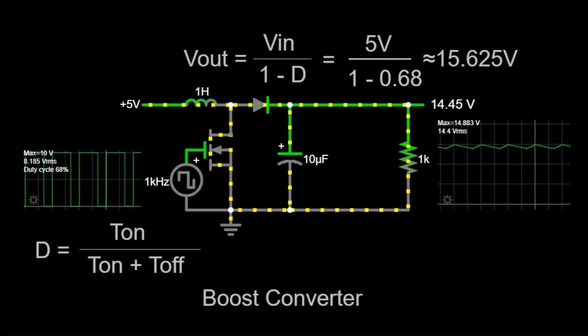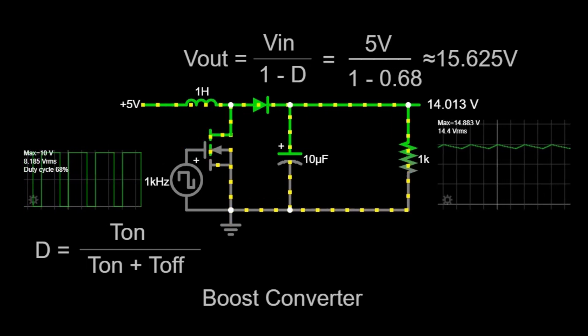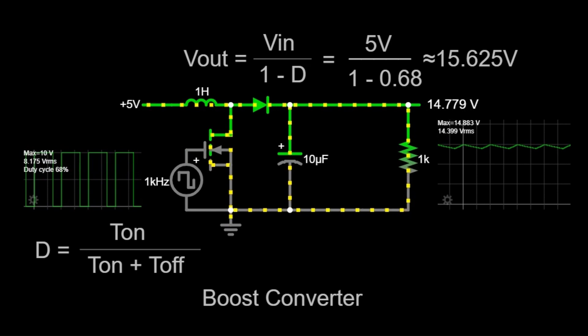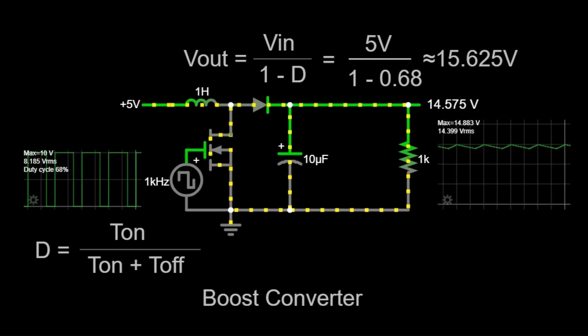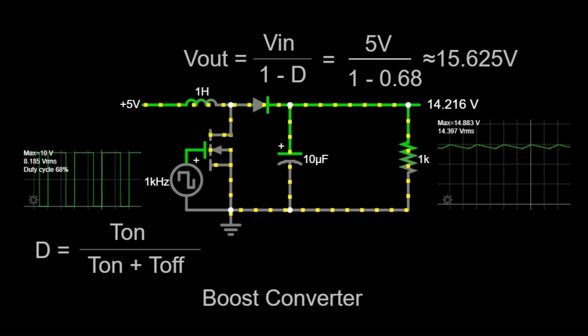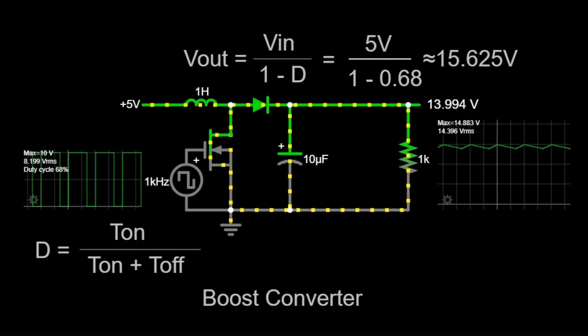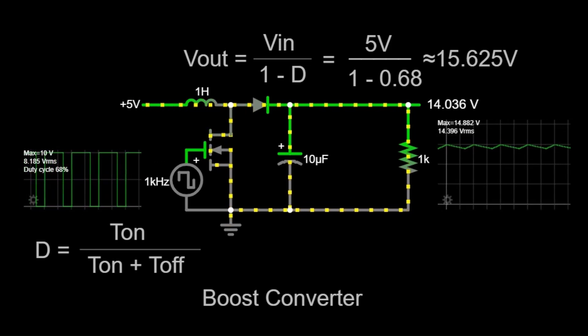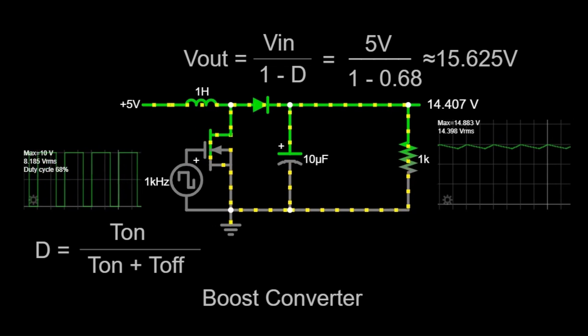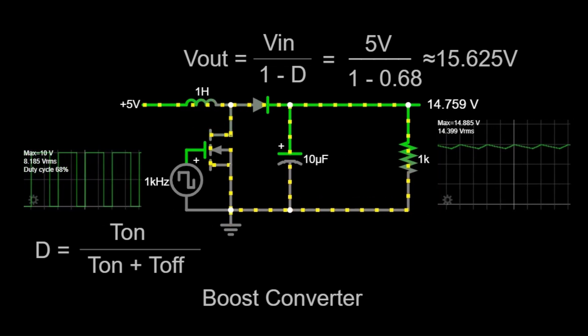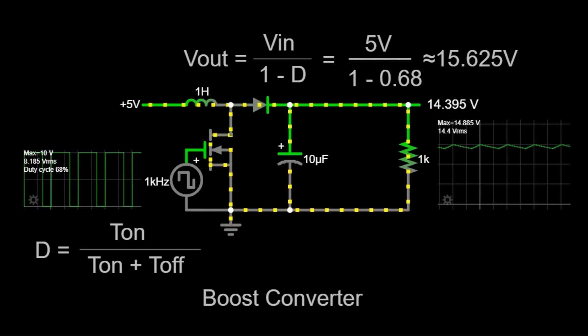First, we have the inductor. The inductor is a passive electronic component that stores energy in the form of a magnetic field when current flows through it. In our circuit, the inductor is labeled as 1 Henry, which is a unit of inductance. The role of the inductor in the boost converter is crucial because it stores energy when the switch is closed and releases it when the switch is open.